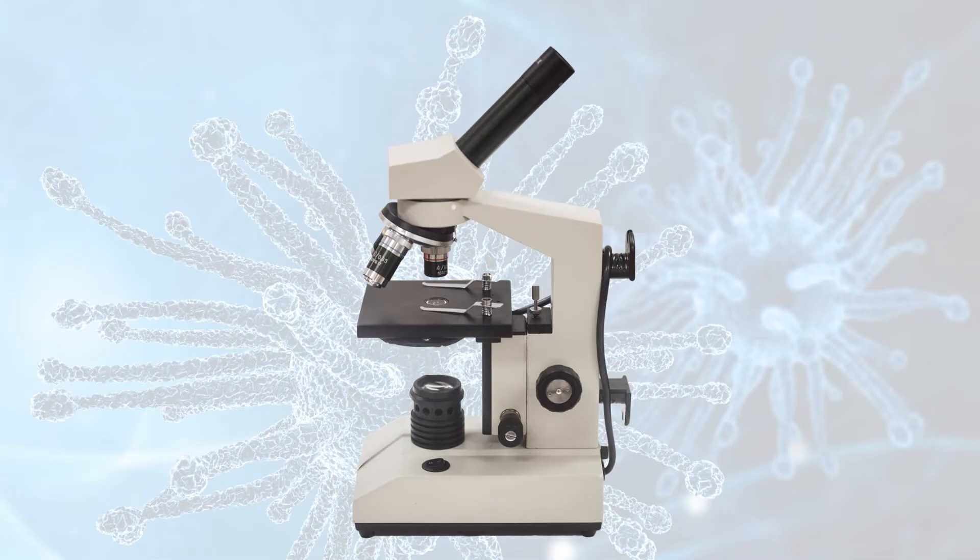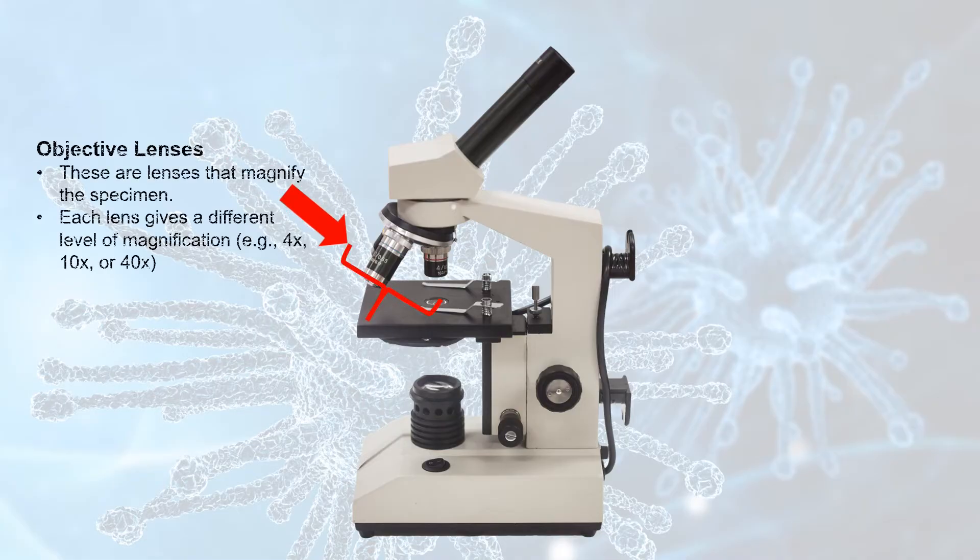Since I just mentioned them, we may as well talk about the objective lenses which are found under the revolving nose piece right here. These are lenses which magnify the specimen. The microscopes in our science lab have three objective lenses.